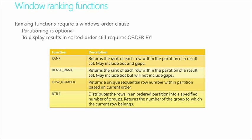The ranking functions available to us: rank, dense rank, row number, and ntile. Rank returns the rank of each row and may include ties and gaps. Dense rank returns the rank of each row, may include ties, but will not include gaps. Row number returns a unique sequential row number within the partition based on the current order. And ntile distributes the rows in an ordered partition and returns a number of the group to which that row belongs.